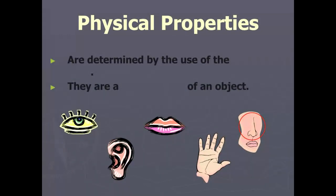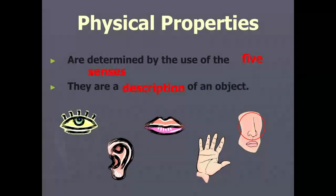You've got two types of properties. The first type is a physical property, and they are determined by the use of the five senses — smelling, touching, tasting, hearing, and seeing. They are a description of an object that's based on your five senses.